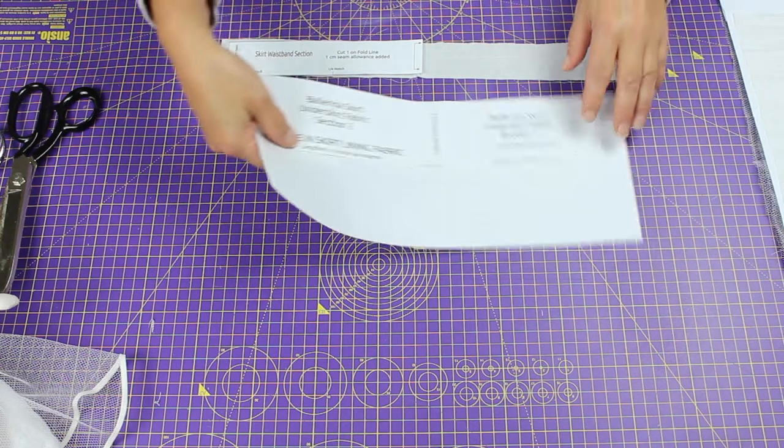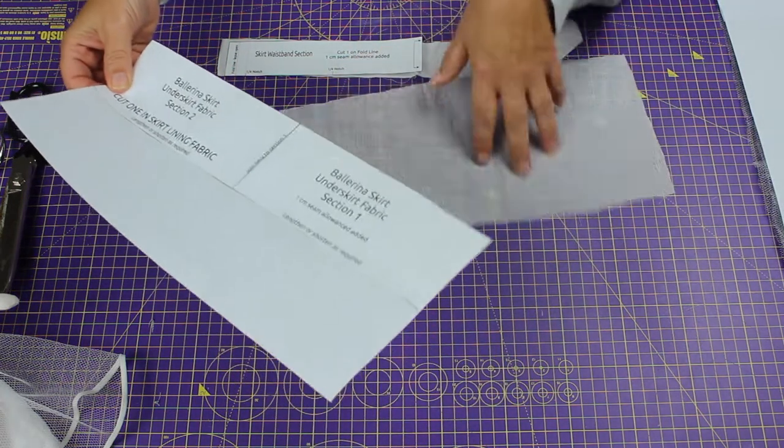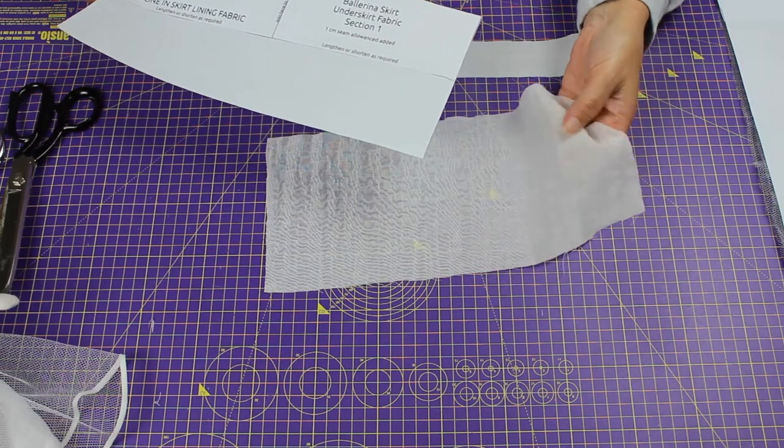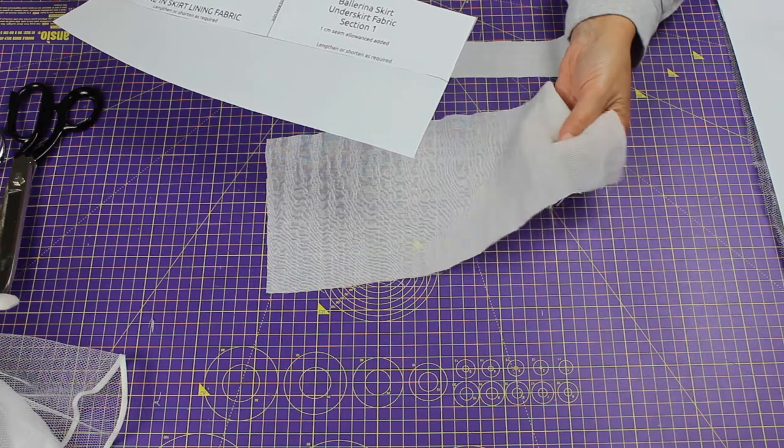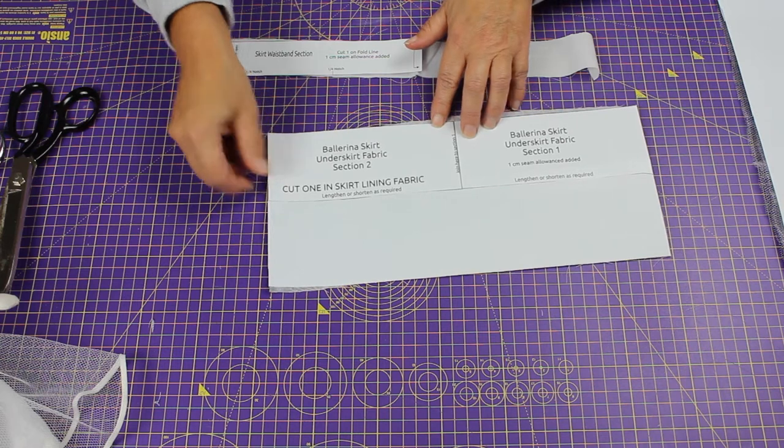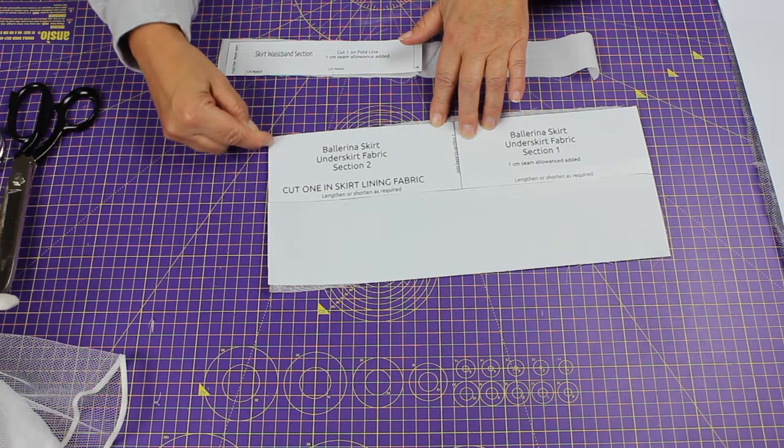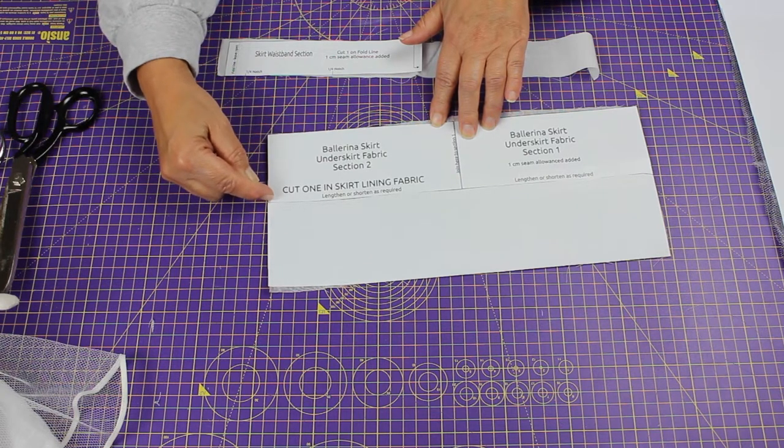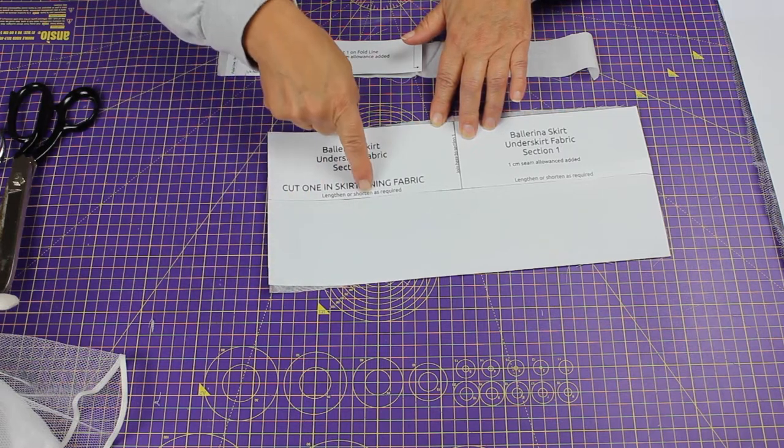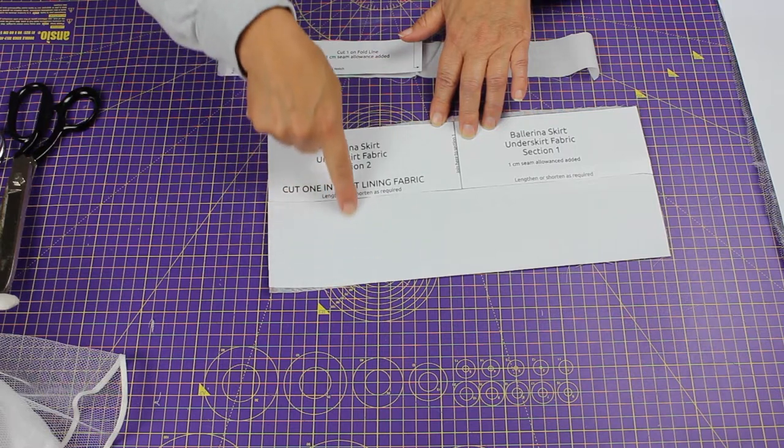My ballerina skirt has been cut in a nice shimmery voile fabric, a kind of cotton lawn with a shimmer. Instead of making the very short version, this pattern works for small or larger dolls, and I've just lengthened the pattern.